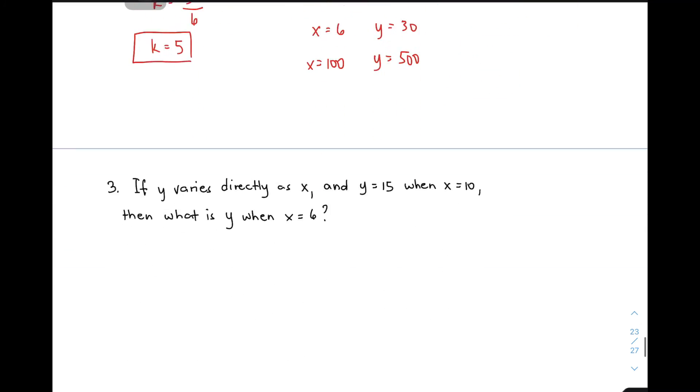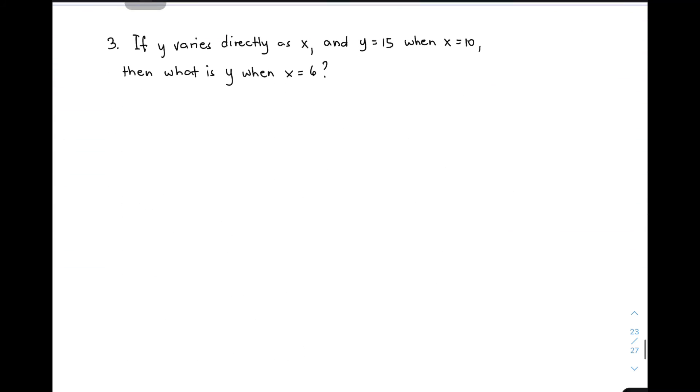Example 3: If Y varies directly as X, and Y is equal to 15 when X is equal to 10, then what is Y when X is equal to 6? Same thing, divide it by 3 parts. First, translate into Y equals KX. The second part is used to find the constant of variation.